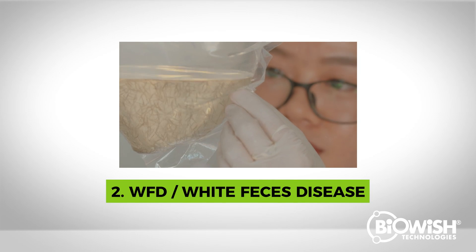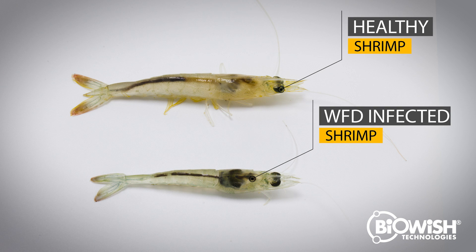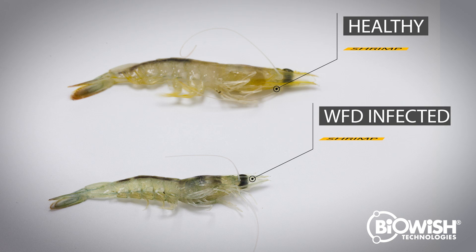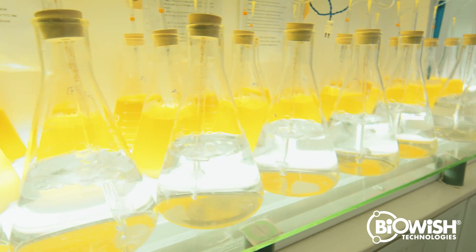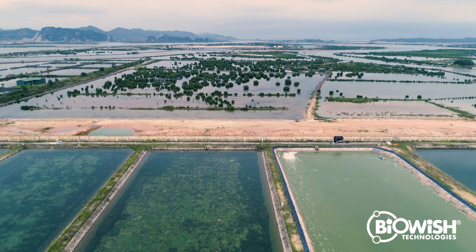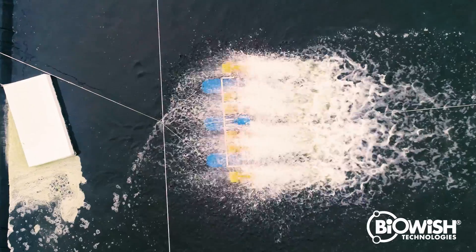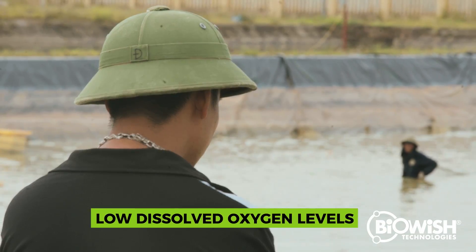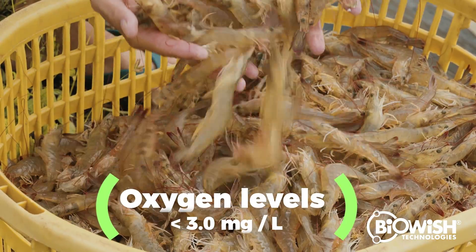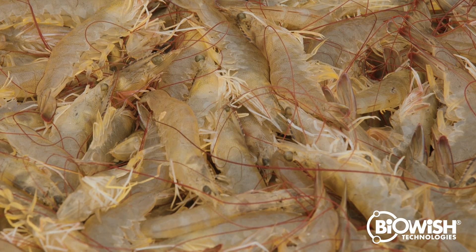White Feces Disease or WFD is also associated with Vibriosis and possibly Gregarines, which are a protozoan parasite. White Feces Disease affects shrimp typically between 60 days of age and harvest. Similar to the causes for EMS, there are many factors which contribute to WFD, such as high levels of Vibrio associated with poor quality post-larva supplied from hatcheries, excessive Vibrio levels in pond or feeder water, inadequate pond preparation methods, low dissolved oxygen levels less than 3.0 milligrams per liter, and poor pond water quality management during grow-out leading to increased Vibrio growth.